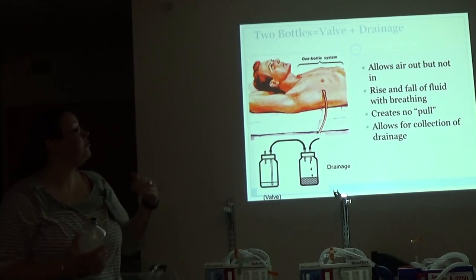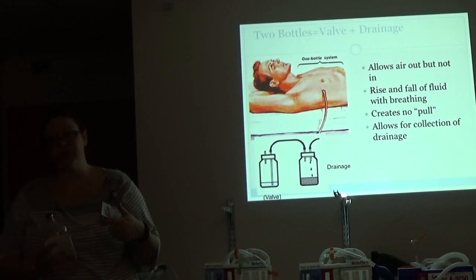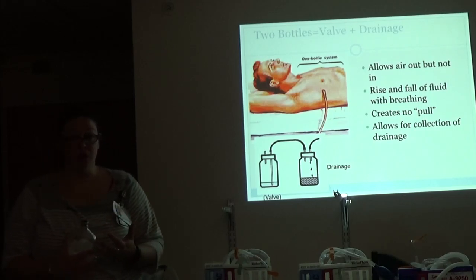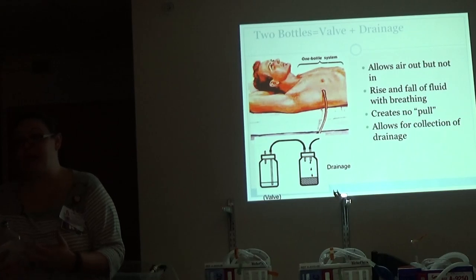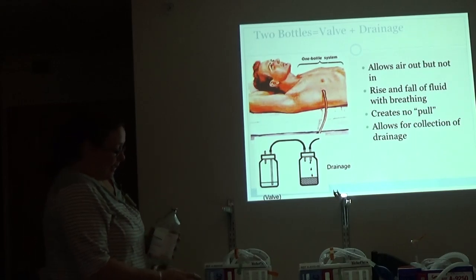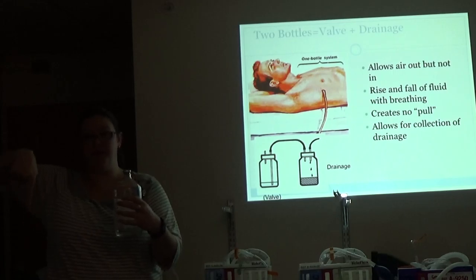So then you got people who need to also have drainage. So we came up with a two-bottle system. So it allows your air out but not in. You get a rise and fall of fluid with breathing. It's called titling. It creates no pull, but it does allow you to collect drainage. So hemothorax, malignant pleural effusions, CHF patients who have pleural fluid. So first bottle collects drainage. Air travels through to second bottle where tube is underneath two centimeters of water to create the water seal.